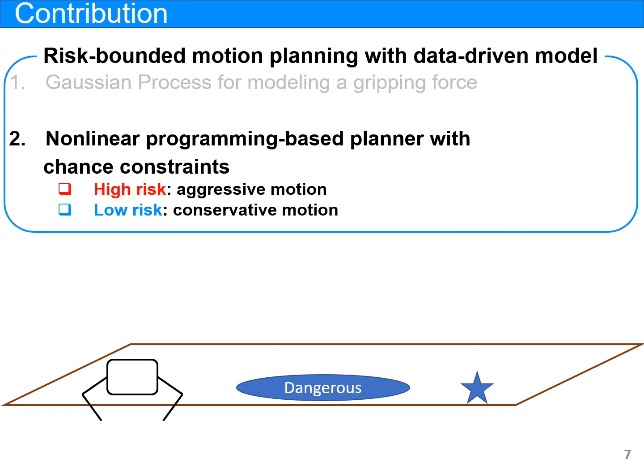Our proposed planner utilizes the chance constraints, which enables the robot to generate various motions based on the defined risk probability. For example, if the risk is high, the planner assumes that the gripper would generate enough force, resulting in aggressive motion. If the risk is low, the planner assumes that the gripper would generate small forces, leading to conservative motion.